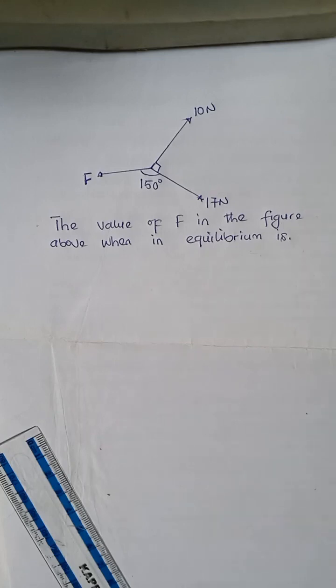So the question as you can see is a physics question, but it's likely to come out in the further maths examination as well. We can see 10 Newton, 17 Newton and F. The F represents force. We said the value of F in the figure above when in equilibrium is. Which means we're actually looking for an unknown force, the third force. It's a system of three coplanar forces, forces that are acting on the same plane and concurrent, acting at a point.